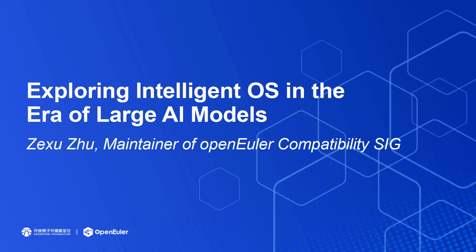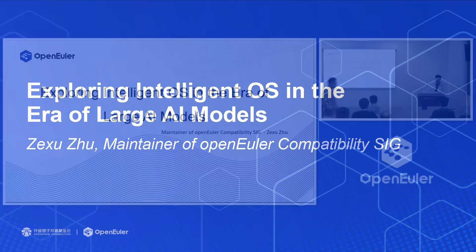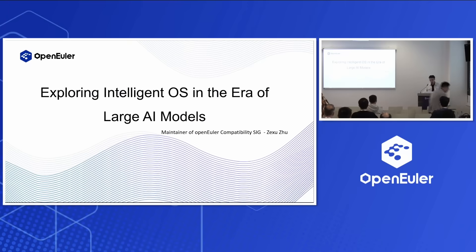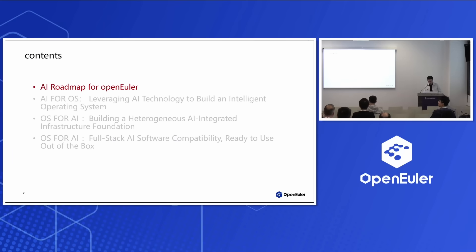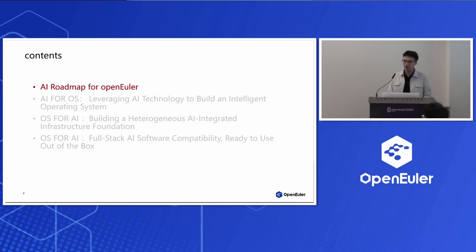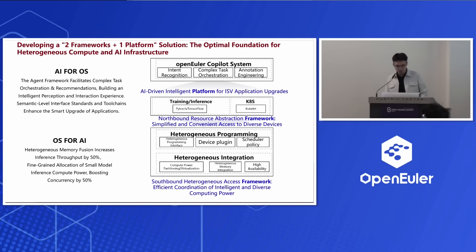Today I will be sharing on the topic of exploring intelligent OS in the area of large AI models. I'm the maintainer of OpenEuler compatibility SIG and I will do my work to develop the tools for AI and for OpenEuler production systems. Today I will make a brief introduction from four aspects. The first is the AI roadmap for OpenEuler. OpenEuler will provide two frameworks and one platform in the future, laying a strong foundation for heterogeneous computing and AI infrastructure.